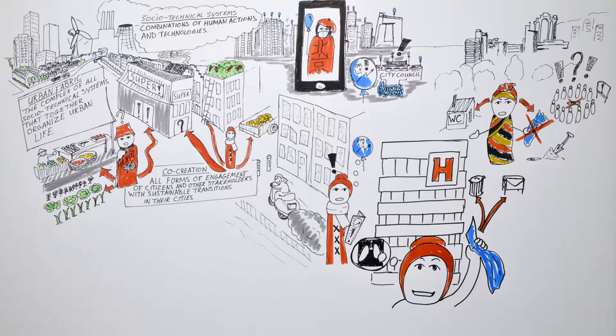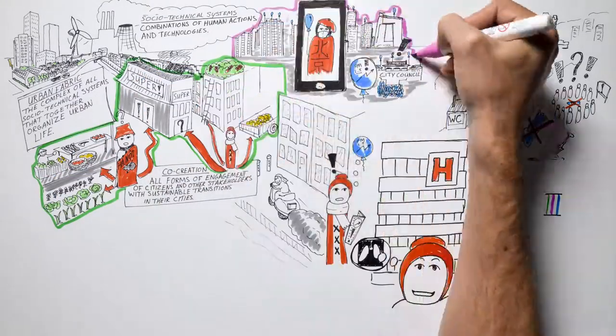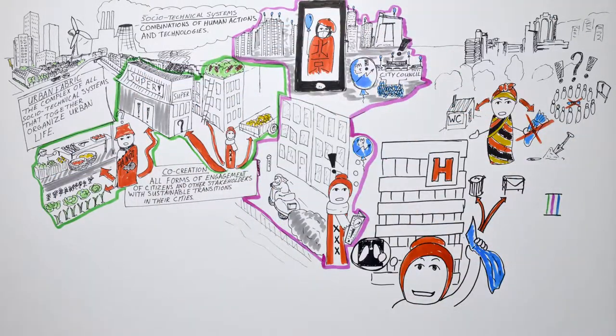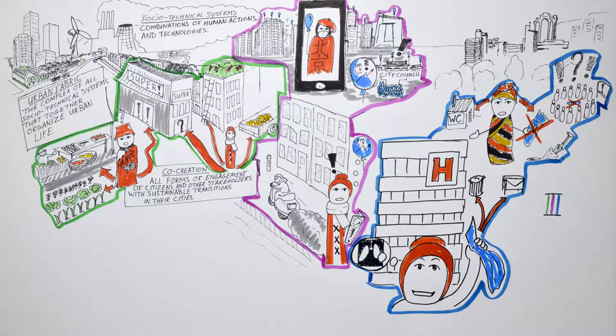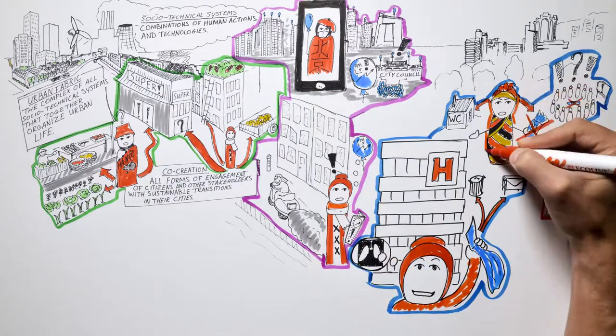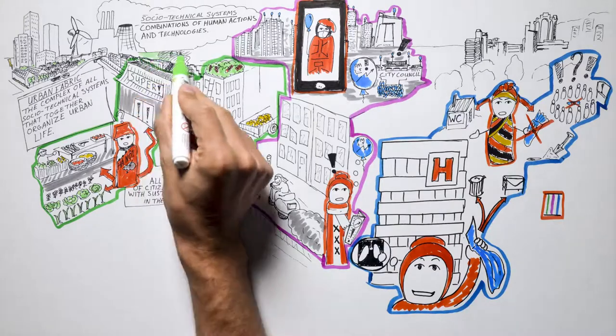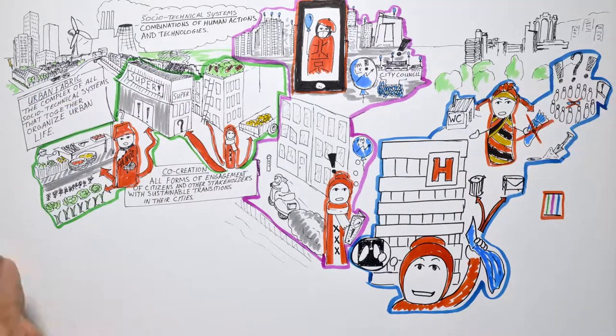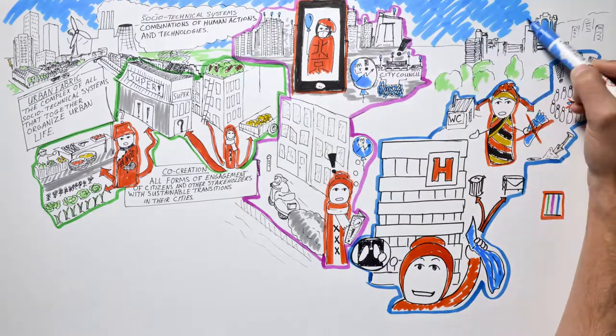Looking back at this picture, we see three clusters of socio-technical systems. Food, air quality and human waste and sanitation are all part of the urban fabric. Citizens like Sam are co-creating sustainability transitions in the urban fabrics around the world. They do so in ways that are tied up with the local, socio-technical and political contexts of their cities.